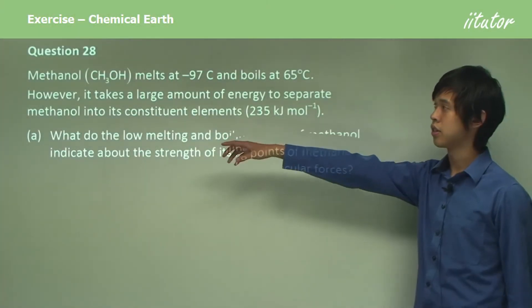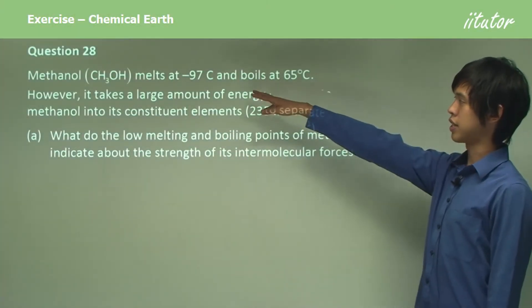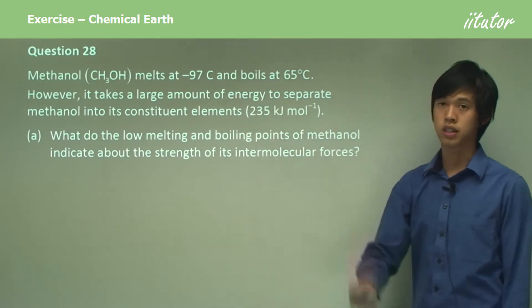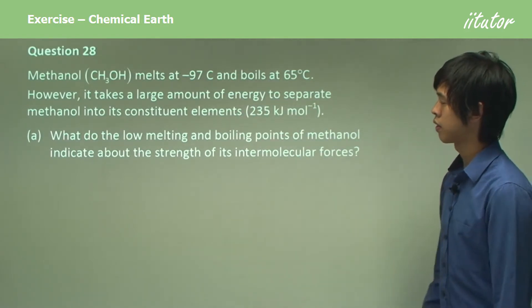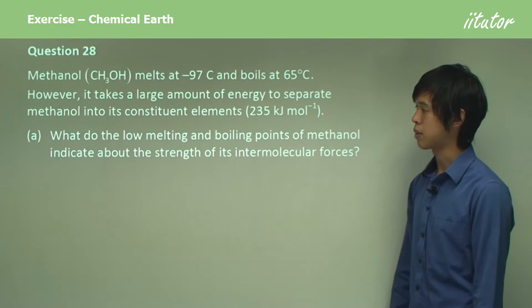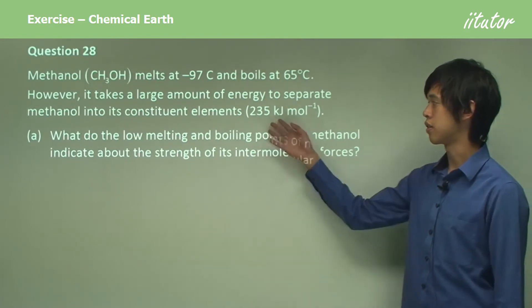Methanol, which is CH3OH, melts at minus 97 degrees Celsius and boils at 65 degrees Celsius. However, it takes a large amount of energy to separate methanol into its constituent elements.